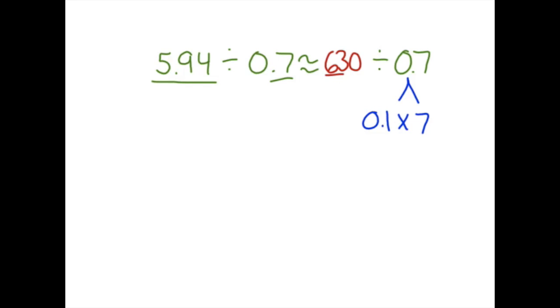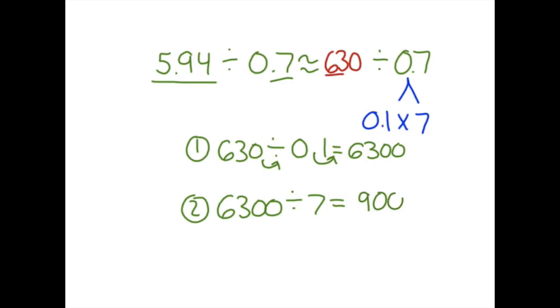So now we're back to solving. Our first step is going to be to take 6.3 and divide that by 0.1. Remember when dividing by 0.1, we need to move our decimal place over 1 to the right. So we need to do the same thing with our dividend. So our answer is going to be 6,300. Our next step is going to be to take that answer and divide that by 7. 6,300 divided by 7 equals 900. And there we have our final answer.